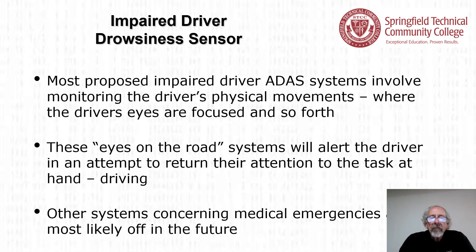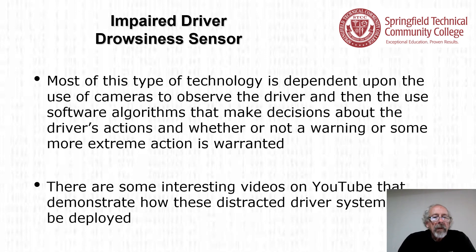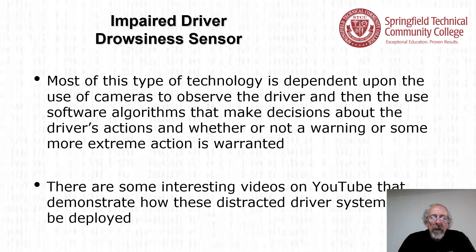Most proposed impaired driver ADAS systems involve monitoring the driver's physical movements and where the driver's eyes are focused. These eyes-on-the-road systems alert the driver to return their attention to driving. Most of this technology depends on cameras to observe the driver and software algorithms that make decisions about the driver's actions and whether a warning or more extreme action is warranted. There are interesting videos on YouTube demonstrating how these distracted driver systems might be deployed.